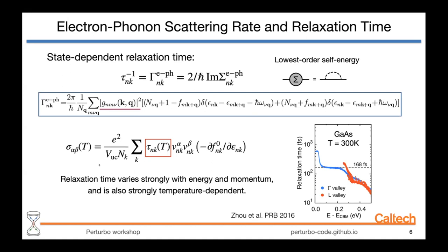To physically justify assigning state dependence to the relaxation times, we can look at actual computed values. This plot shows the relaxation time as a function of carrier energies in gallium arsenide at 300 Kelvin. As we can see, it is hugely dependent on energy and momenta, spanning almost two orders of magnitude. In cases like these, a constant relaxation time is simply not accurate, and therefore the state-dependent formalism is the way to go.